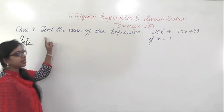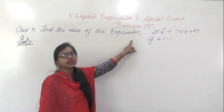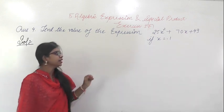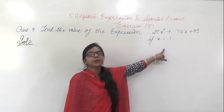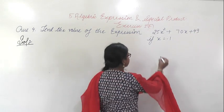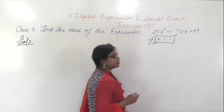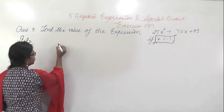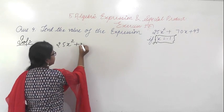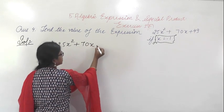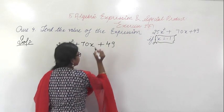In this question it is saying: find the value of the expression 25x² + 70x + 49 if x is equal to minus 1. The condition given to you is x = -1. So the question is 25x² + 70x + 49.